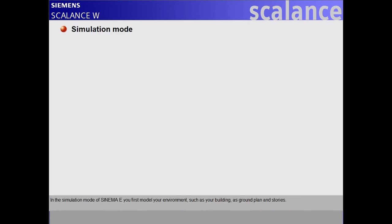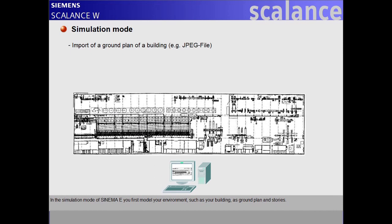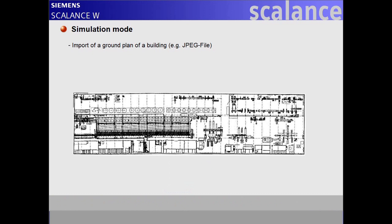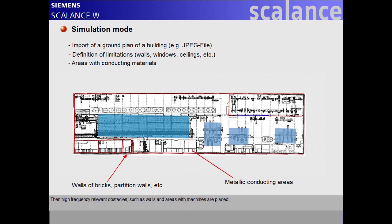In the simulation mode of CINEMA-E, you first model your environment, such as your building, as ground plan and stories. Then, high-frequency relevant obstacles, such as walls and areas with machines, are placed.